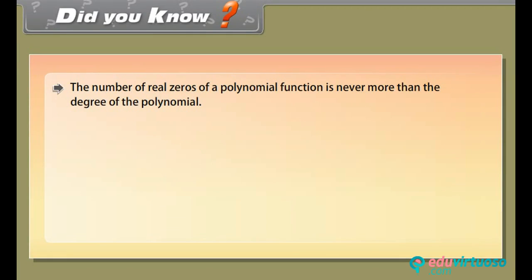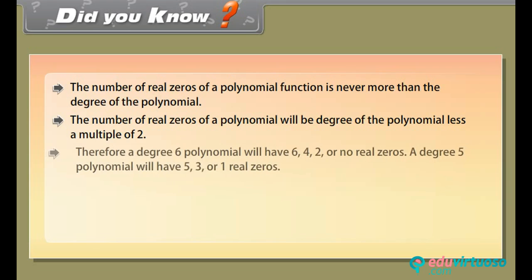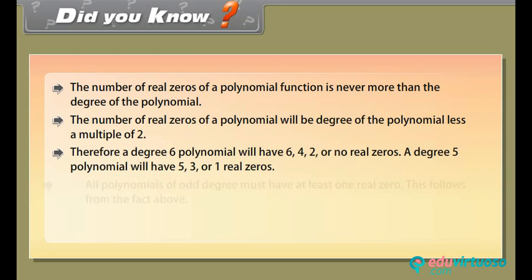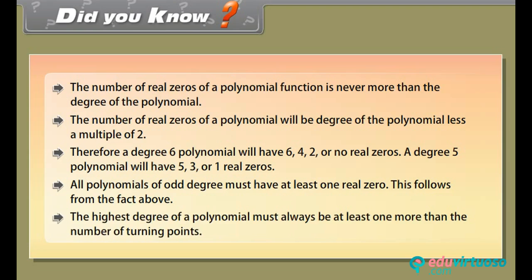Did you know: The number of real zeros of a polynomial function is never more than the degree of the polynomial. The number of real zeros will be the degree less a multiple of 2. Therefore, a degree 6 polynomial will have 6, 4, 2, or no real zeros. A degree 5 polynomial will have 5, 3, or 1 real zeros. All polynomials of odd degree must have at least one real zero. The highest degree of a polynomial must always be at least one more than the number of turning points.